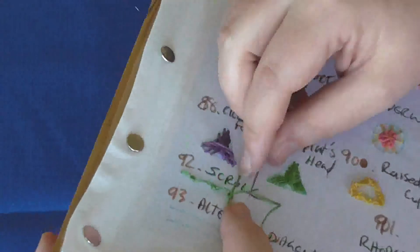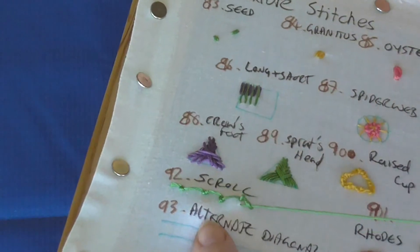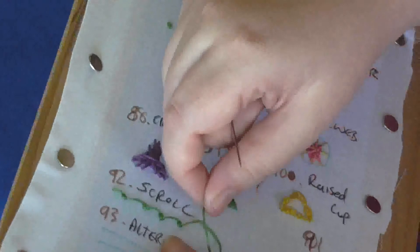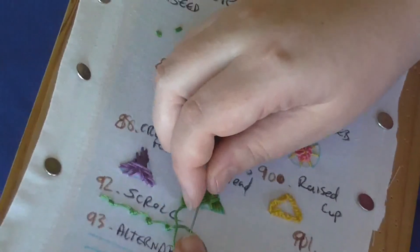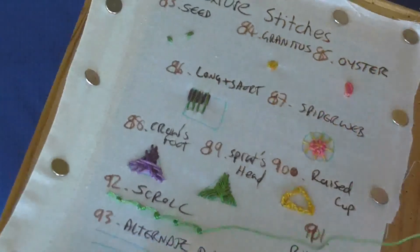That is a scroll stitch, and you can use that for bordering and outlining, and for stems and things with buds on. Just add a stem stitch or something in a different color, you make a nice little bud. That is a scroll stitch.